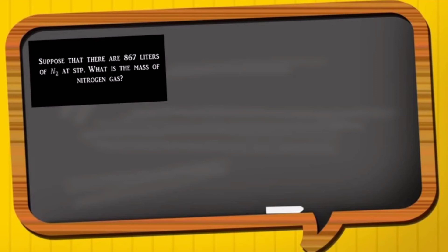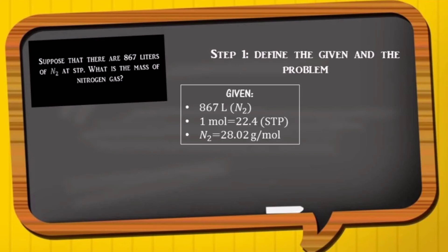first we have to list the known quantities and plan the problem before we calculate. So we are given 867 liters of nitrogen gas and 1 mole is equal to 22.4 liters. And the molar mass of nitrogen gas is 28.02 grams per mole.